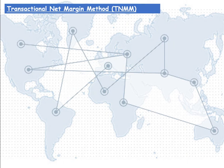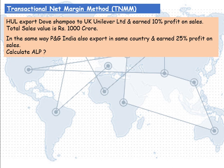Our last method of computing arms length price is the Transactional Net Margin Method, which is very simple to calculate. For example, Hindustan Unilever exports Dove shampoo to UK Unilever Limited and earns 10% profit on sale, with total sale value of Rs 1,000 crore. Similarly, P&G India also exports to the same country and earns 25% profit on sale. Calculate the arms length price. On the basis of profit margin comparison between the two FMCG companies on the same transaction, we can calculate the arms length price.